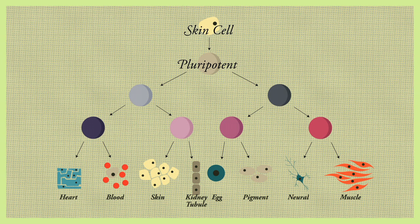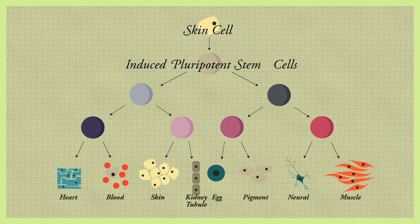This newfound ability is known as pluripotency, and therefore these cells are known as induced pluripotent stem cells, or IPS cells.